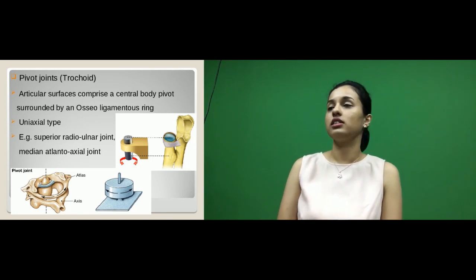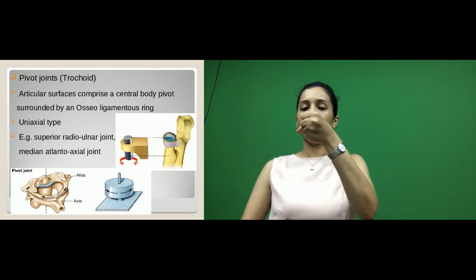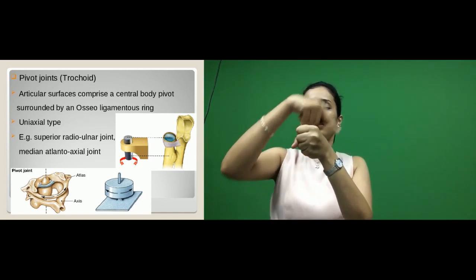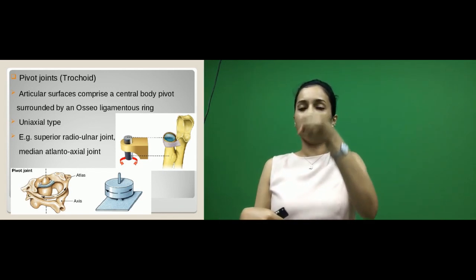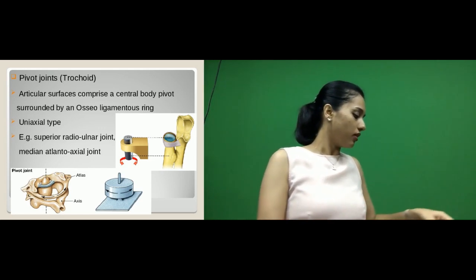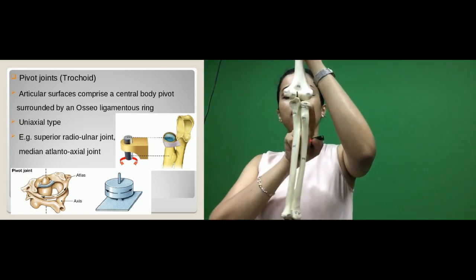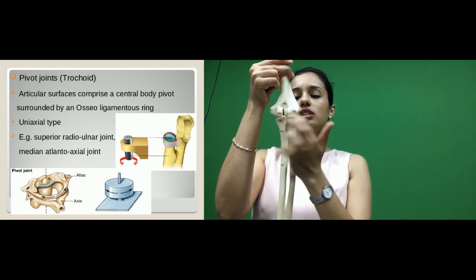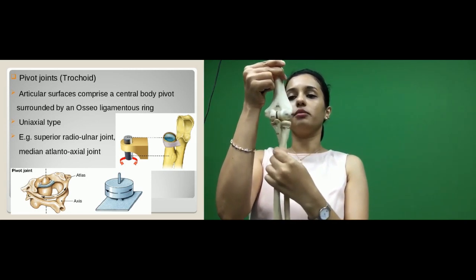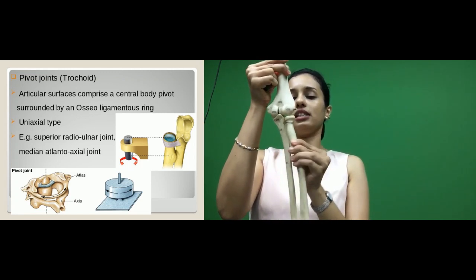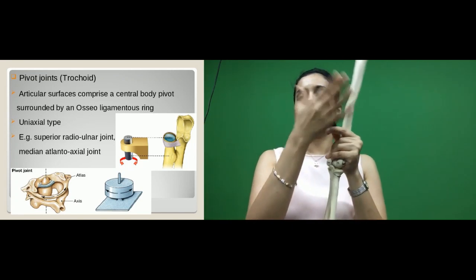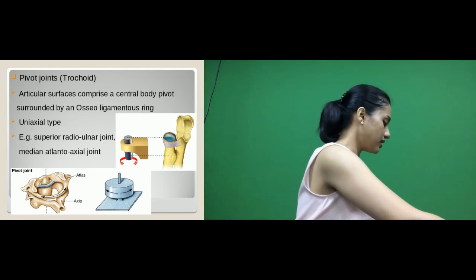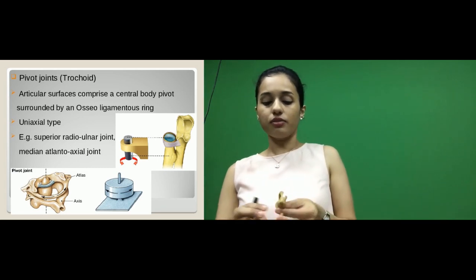The next type is pivot joints. Here there is a central axis surrounded by an osteofibrous structure — part bone completed by a membrane or ligament, forming an osteoligamentous structure. Movement occurs within that central axis. A very good example is the superior radioulnar joint, between the head of the radius and the ulna. The head of the radius acts like a pivot, with the annular ligament around it, mainly helping in supination and pronation. This is also assisted by the interosseous membrane between the radius and ulna.